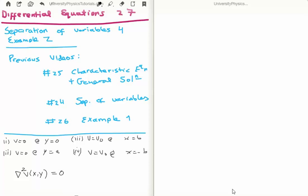So in the bottom left of your screen I have written the boundary conditions: v is equal to 0 at y is equal to 0, v is equal to 0 at y is equal to a, v is equal to v0 at x is equal to b and v is equal to v0 at x is equal to minus b. Notice you're dealing with a two dimensional function and we're saying that it satisfies Laplace's equation.